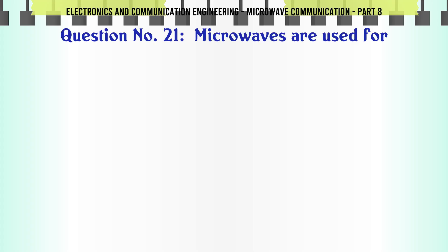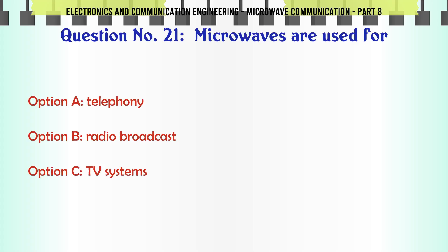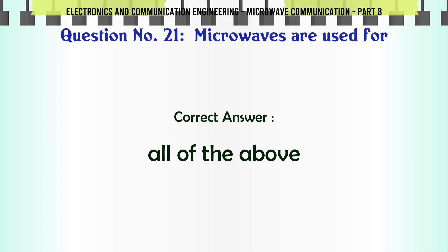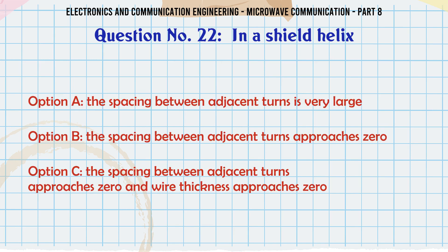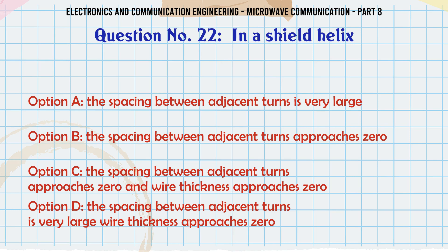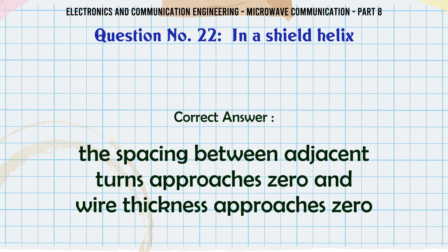Microwaves are used for — A. Telephony, B. Radio broadcast, C. TV systems, D. All of the above. The correct answer is all of the above. In a shielded helix — A. The spacing between adjacent turns is very large, B. The spacing between adjacent turns approaches 0, C. The spacing between adjacent turns approaches 0 and wire thickness approaches 0, D. The spacing between adjacent turns is very large and wire thickness approaches 0. The correct answer is: spacing between adjacent turns approaches 0 and wire thickness approaches 0.